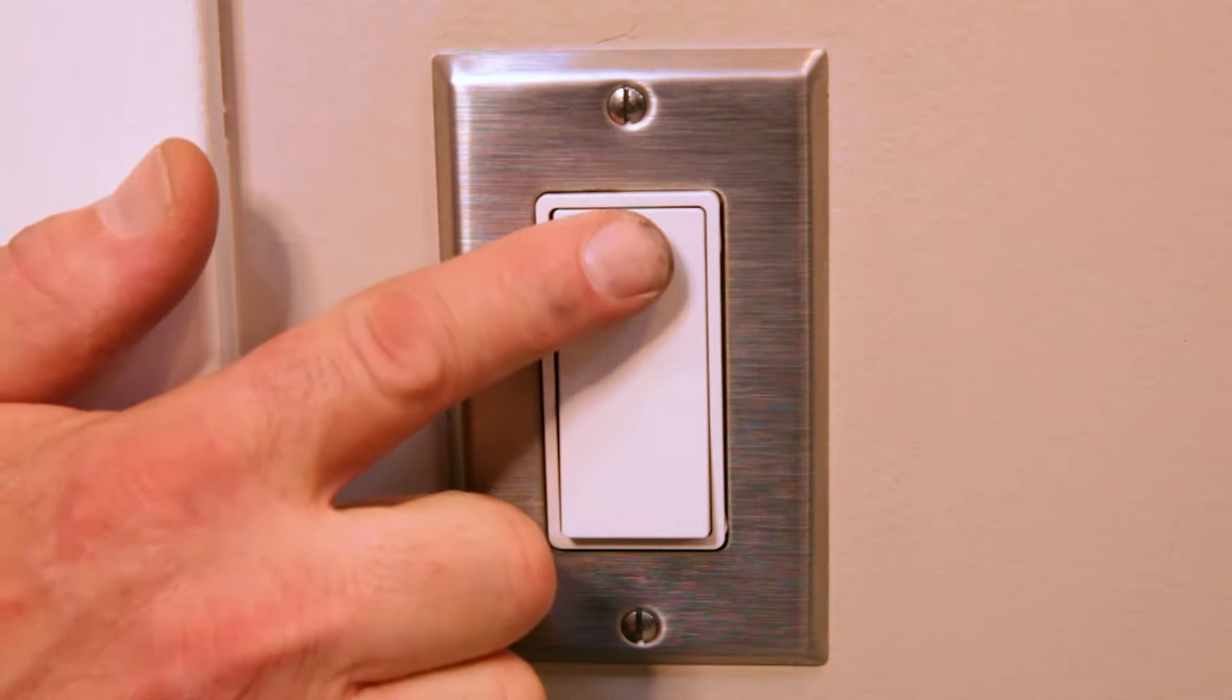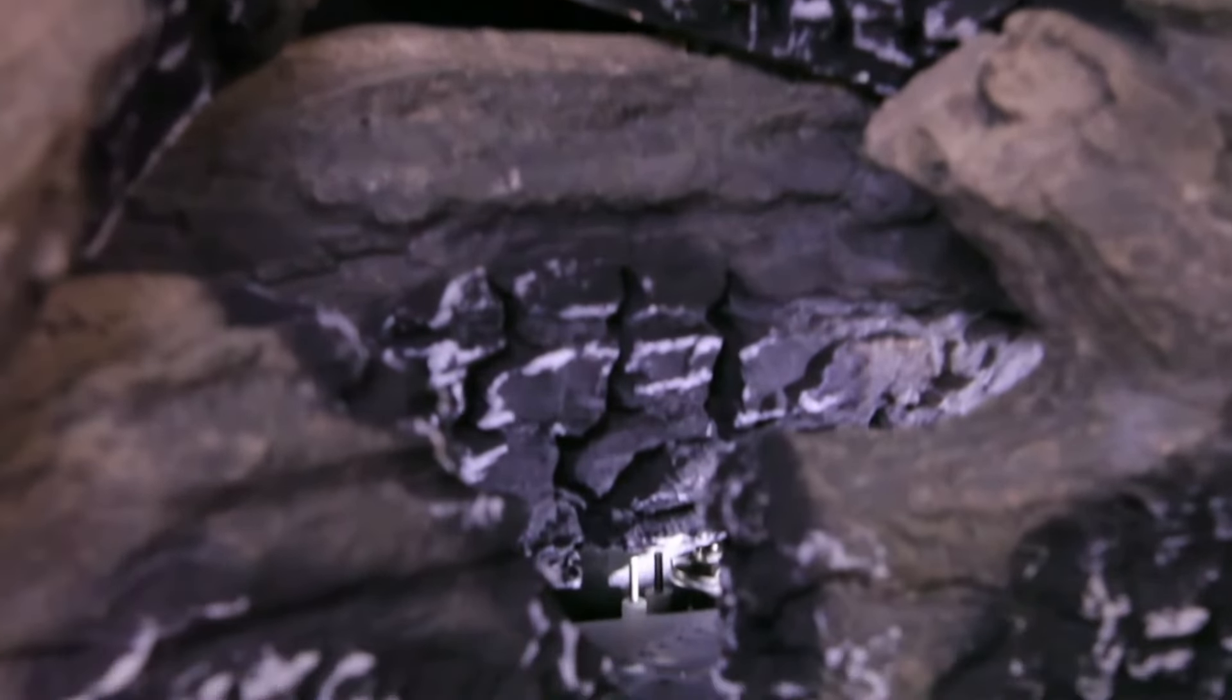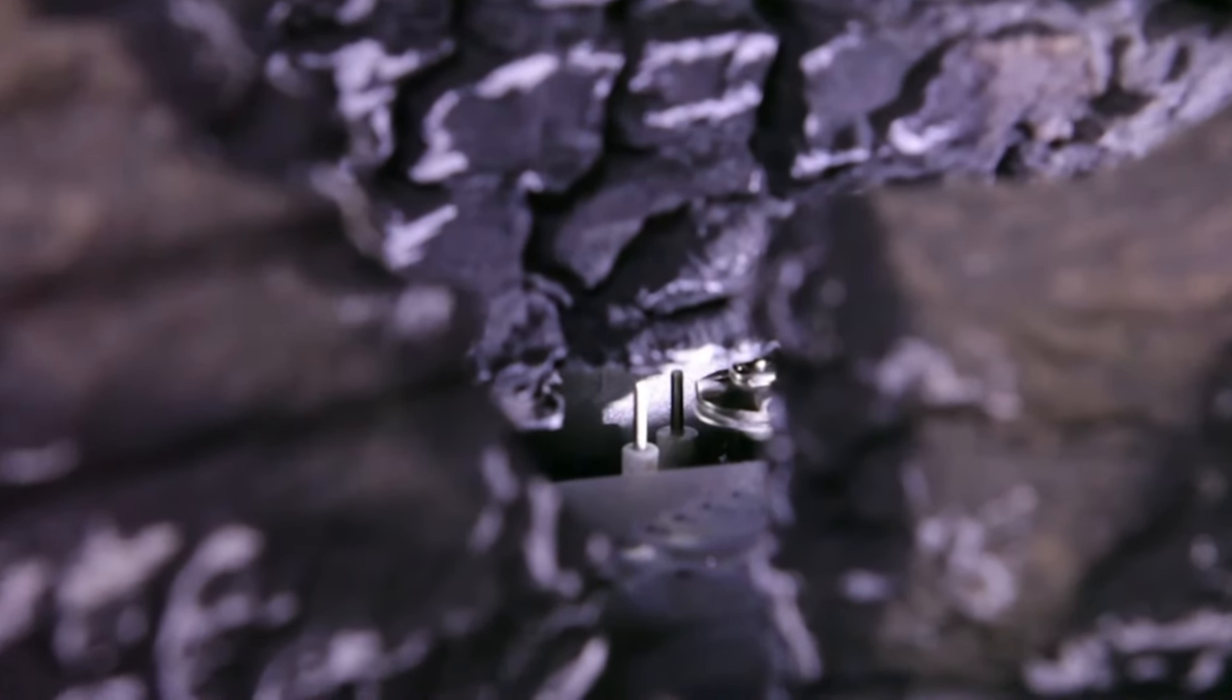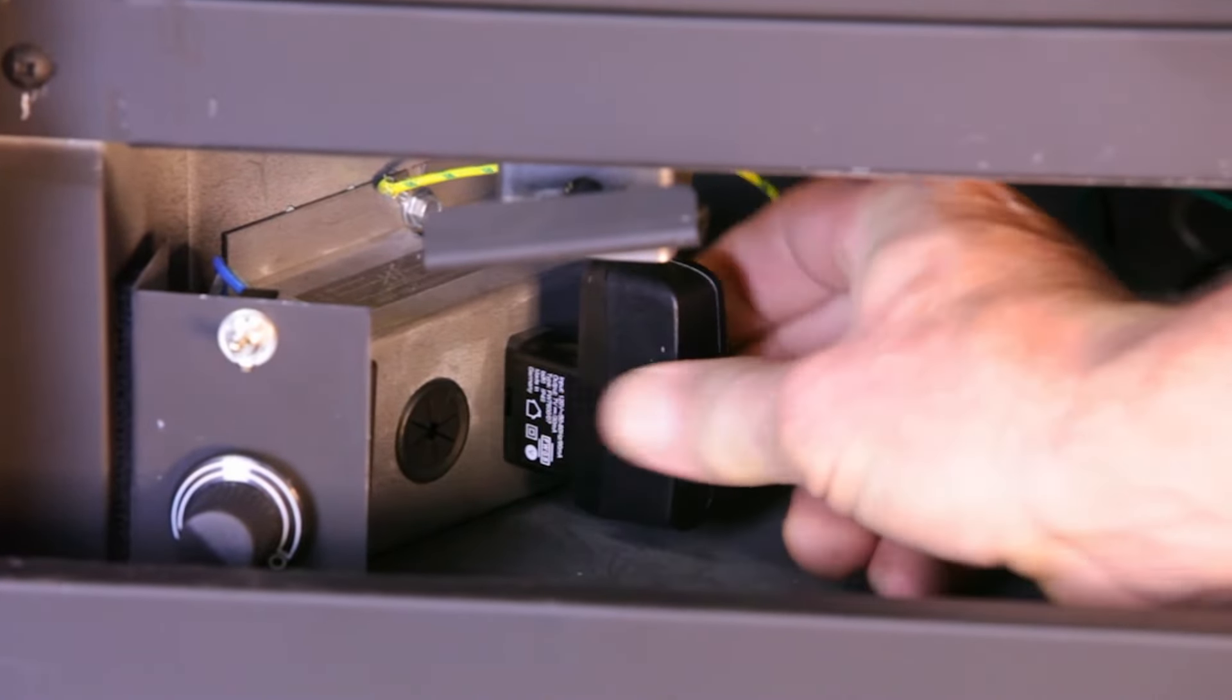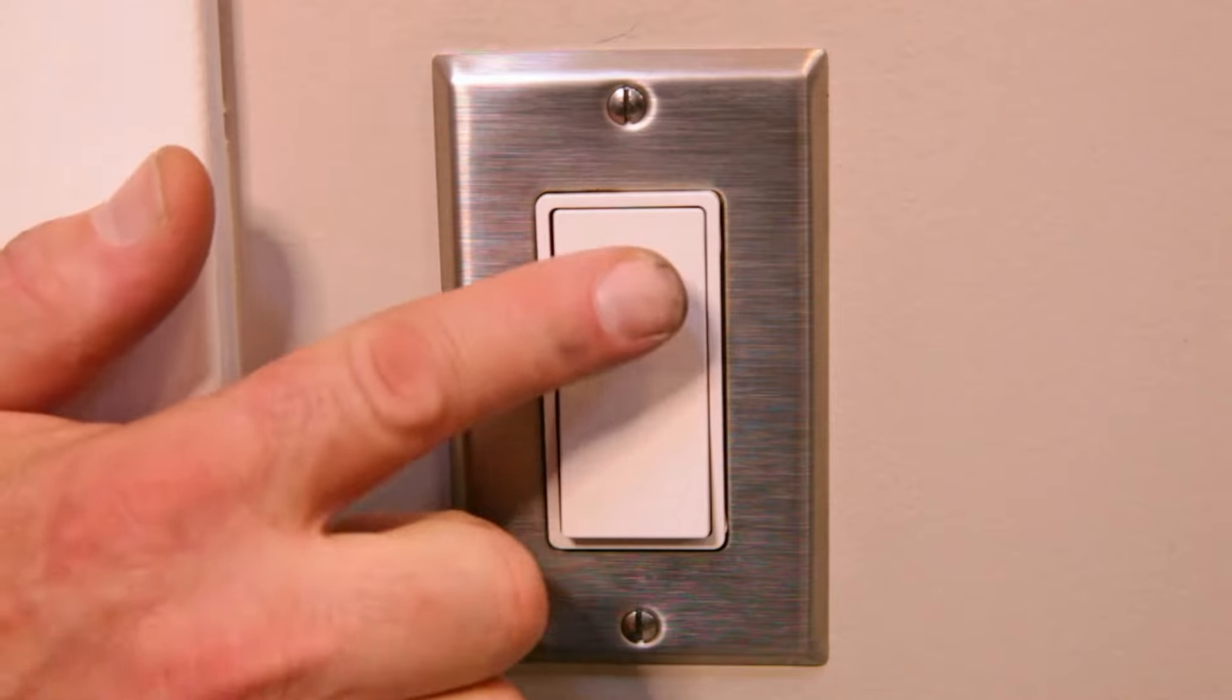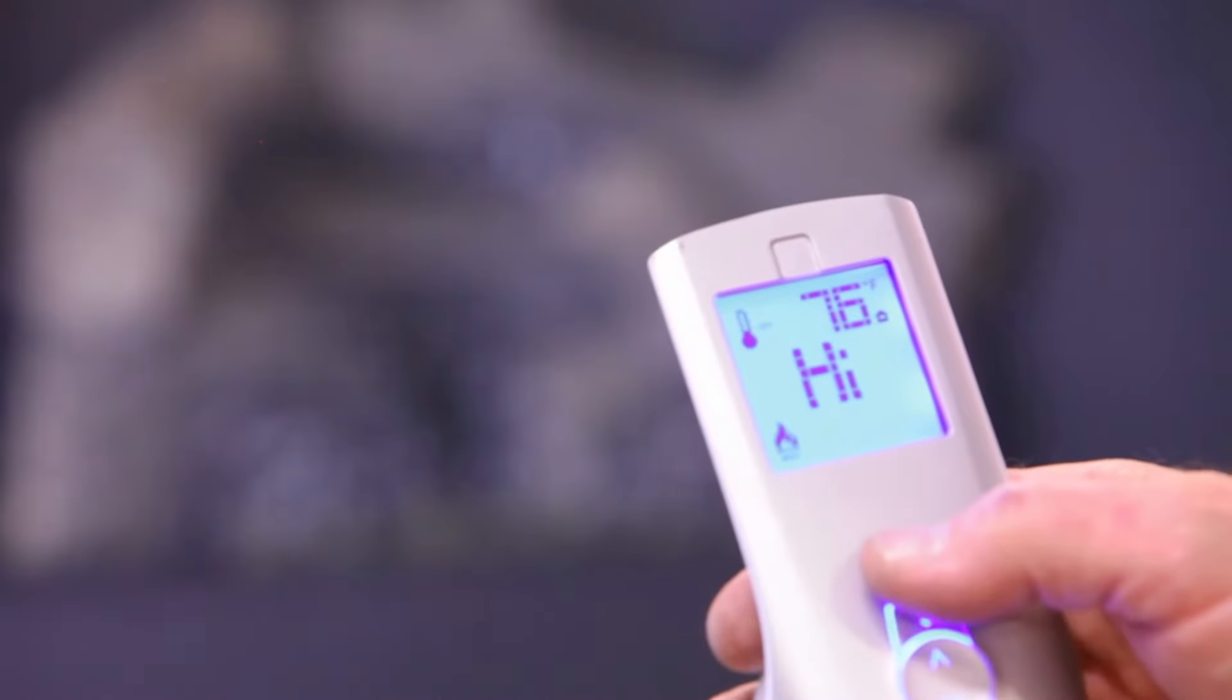When you first turn on your fireplace, initiate call for heat by turning on a wall switch or using your optional remote control. If you don't see a spark at the pilot hood, then check to see if there is electricity to the fireplace. Plug in the transformer, it may be concealed, and try the switch or remote again.